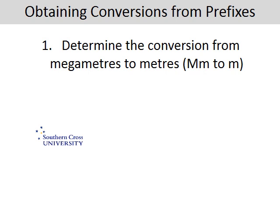Looking at the first question, we need a conversion to take us from megameters to meters. So on one side of an equal sign I'm going to put one megameter, and on the other side I'll balance that by putting in the true meaning of the prefix mega, which is million. So I'll replace mega with the number a million. Now I've got the conversion: one megameter equals a million meters.